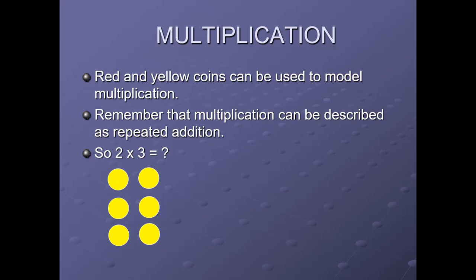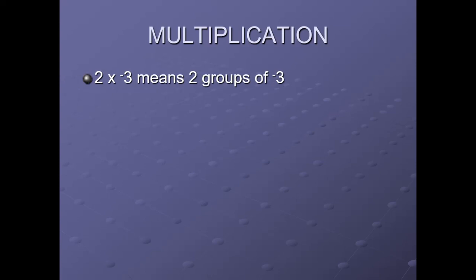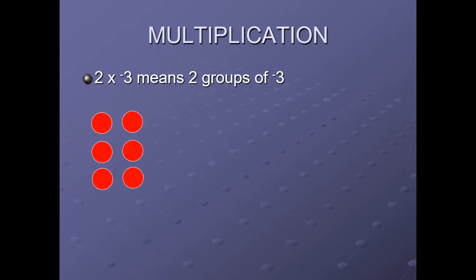Now, 2 times 3: here, 2 groups of 3 coins, that is 6 coins. Hence 2 × 3 = 6. Now 2 times of minus 3: 2 × (−3) means 2 groups of minus 3. Negative is represented by red color coins. Hence 2 times of minus 3 is minus 6.